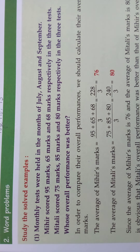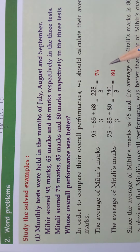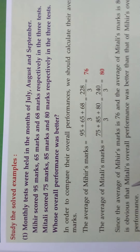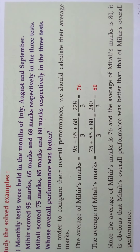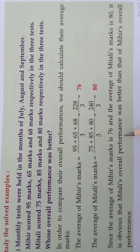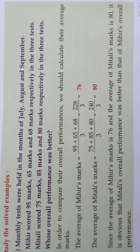Now you can compare easily. The average of Mihir's marks is 76 and the average of Mittali's marks is 80. It is obvious that Mittali's overall performance was better than Mihir's. Mittali's performance was better because her average is 80. So this is about word problems in average.